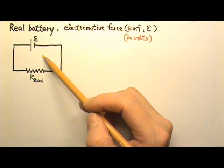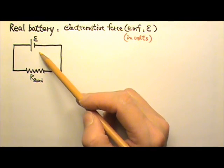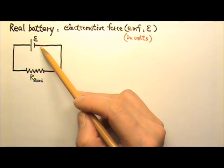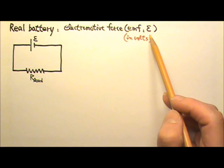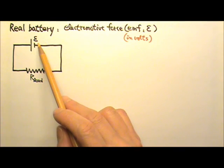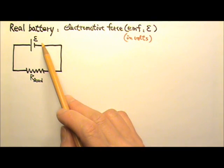When we draw a battery in a circuit like this, we treat it like an ideal battery. This ideal battery provides a voltage difference across the terminals, and this voltage difference is called the electromotive force, or EMF, which is determined by the chemical reactions in the battery. A 1.5V battery has an EMF of 1.5V, and a 12V battery has an EMF of 12V.